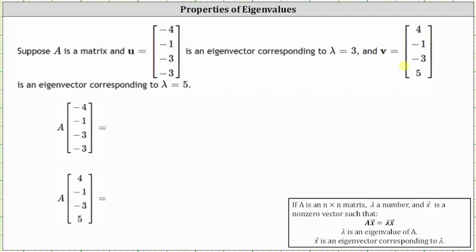For the first part, we're asked to find matrix A times vector U and matrix A times vector V. Because we have an eigenvector and the corresponding eigenvalue, we can determine matrix A times the eigenvector by computing lambda, the eigenvalue, times the eigenvector.